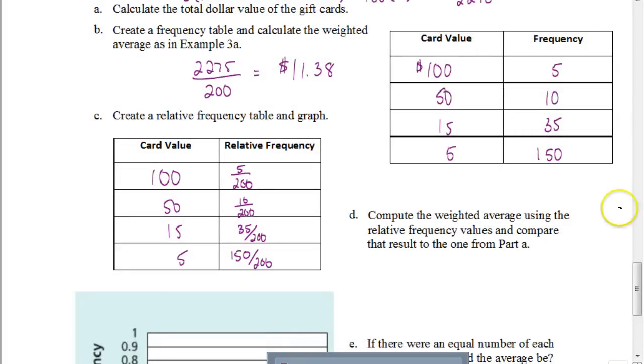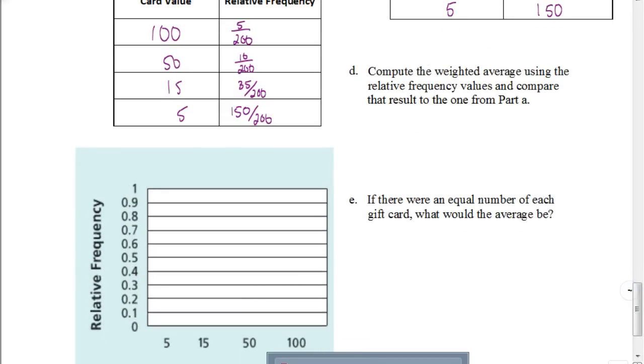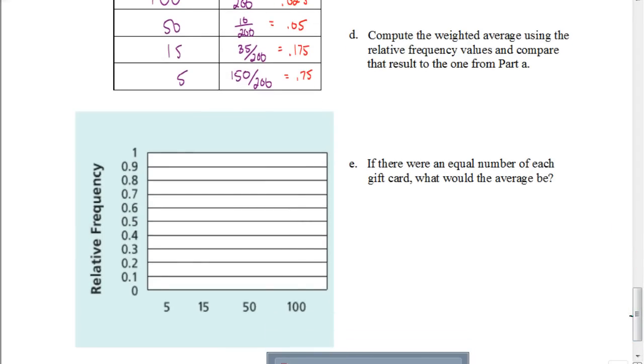Now we're going to create a graph for that. To create a graph, notice how our relative frequency is in terms of a decimal. So we've got to change each of these fractions, these ratios, into its decimal equivalent. So 5 divided by 200 would give me 0.025. 10 divided by 200 would be 0.05. 35 divided by 200 is 0.175. And 150 divided by 200 is 0.75. So now I'm going to be able to create a frequency graph. We're going to create a bar graph just like you did yesterday in your assignment.